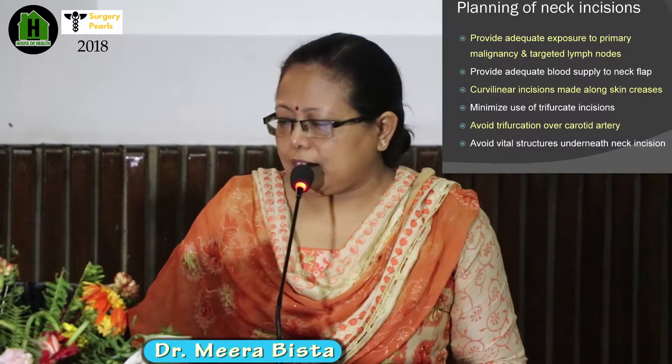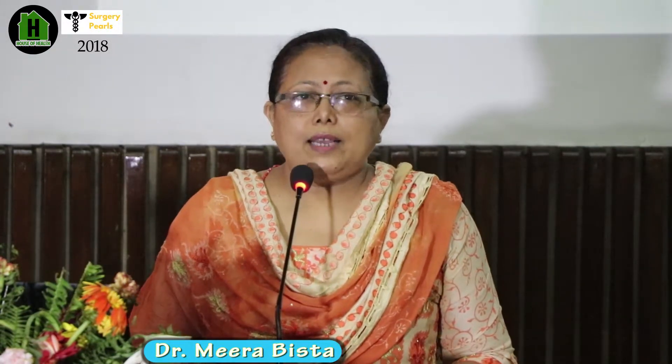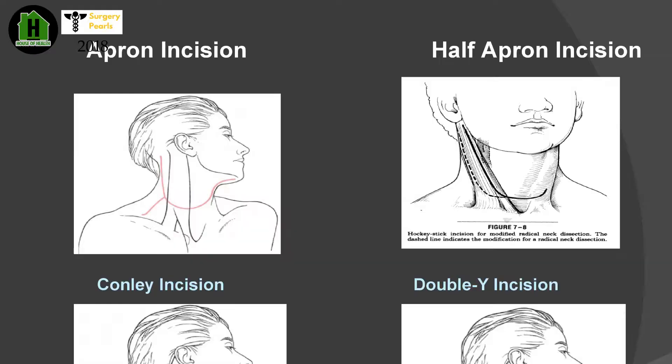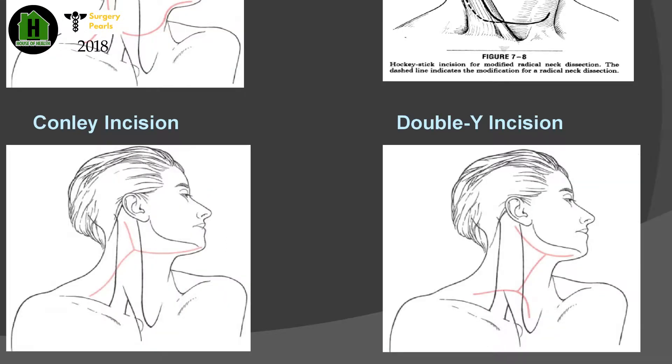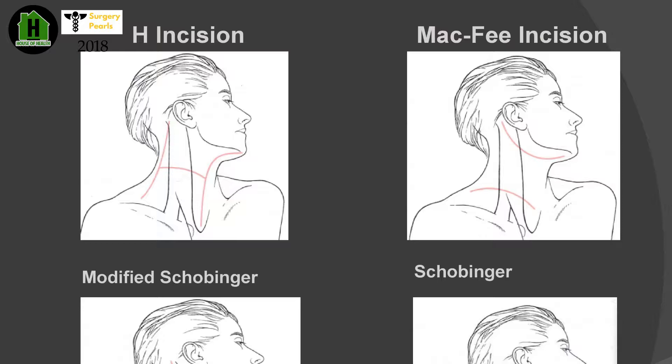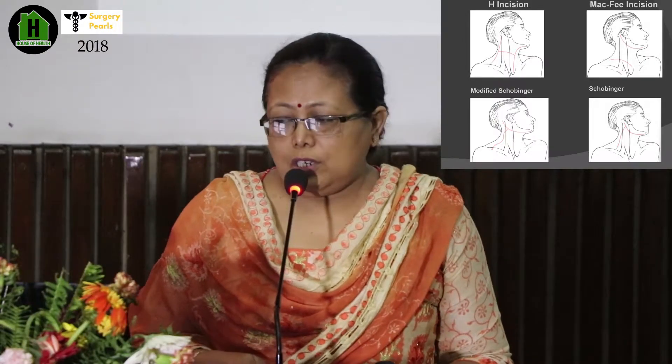Avoid vital structures underneath the neck dissection. Important neck dissection incisions include the Apron incision, half-Apron incision, Conley incision, double-Y incision, H-shift incision, and MacFee incision. The MacFee incision — a double parallel line incision — is very important for irradiated necks. If the neck has been irradiated before surgery, MacFee incision is the best choice as there are no triradiate points. Also used are modified Schobinger and Schobinger incisions.